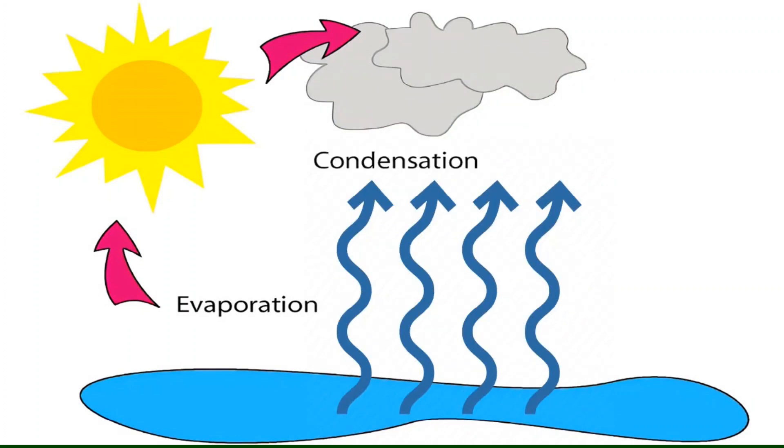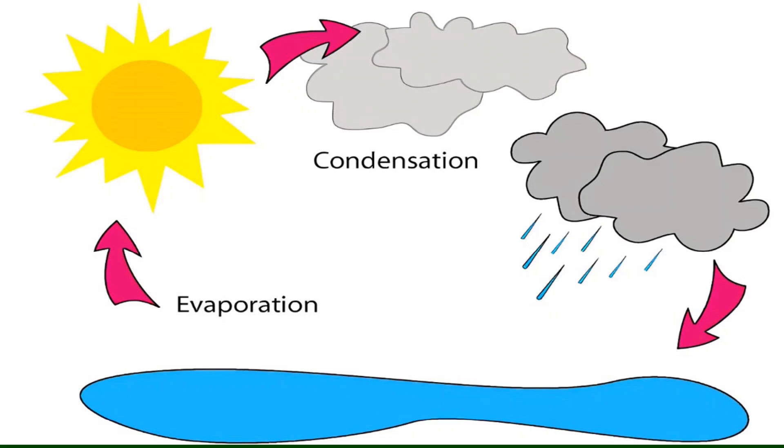And then after that we have rain, and the rain goes into the sea again, and the process starts all over again. That's how the water cycle works.